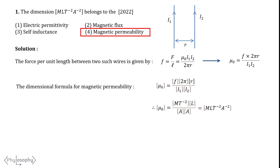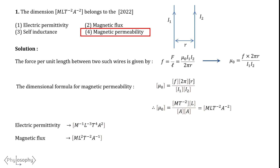For the rest of the options: the dimensional formula for electric permittivity is M⁻¹L⁻³T⁴A². The dimensional formula for magnetic flux is ML²T⁻²A⁻¹. And for self-inductance, the dimensional formula is ML²T⁻²A⁻².